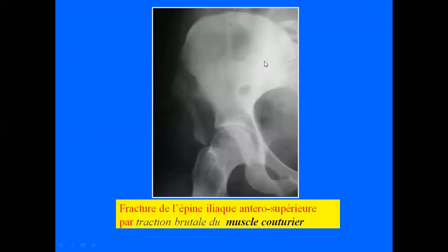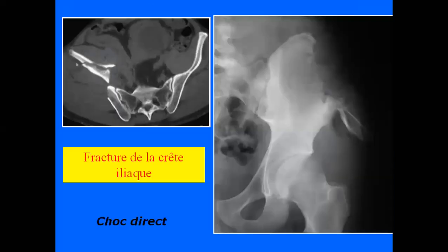Sur cette radiographie, on a un détachement de l'épine iliaque antéro-supérieure, cette fois-ci par contraction brutale du muscle couturier ou sartorius. Sur cette autre radiographie et ce scanner, on voit une fracture de l'aile iliaque, de la crête iliaque — une partie de l'os iliaque qui est sous la peau, palpable, et qui peut être fracturée par un choc direct.